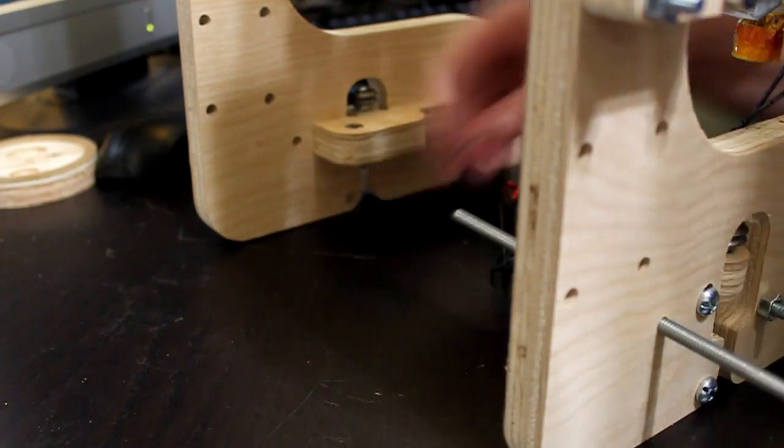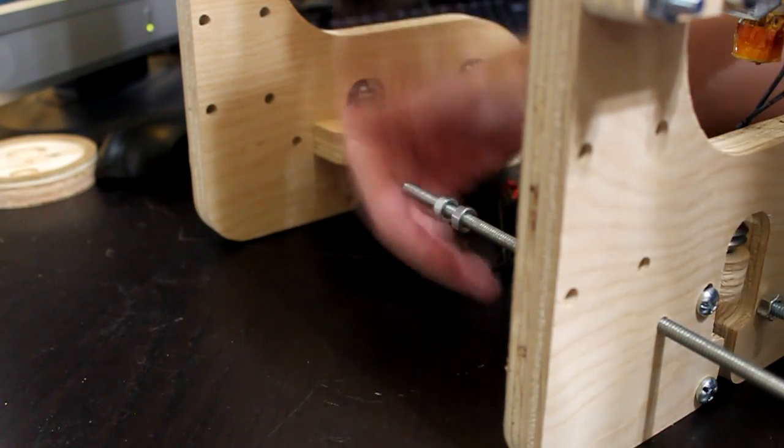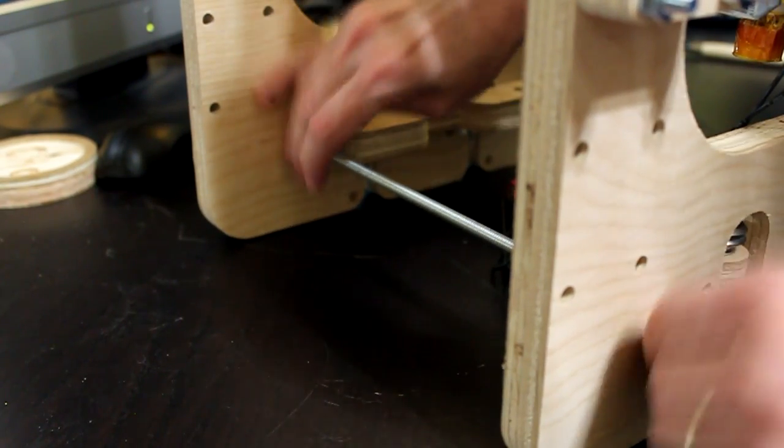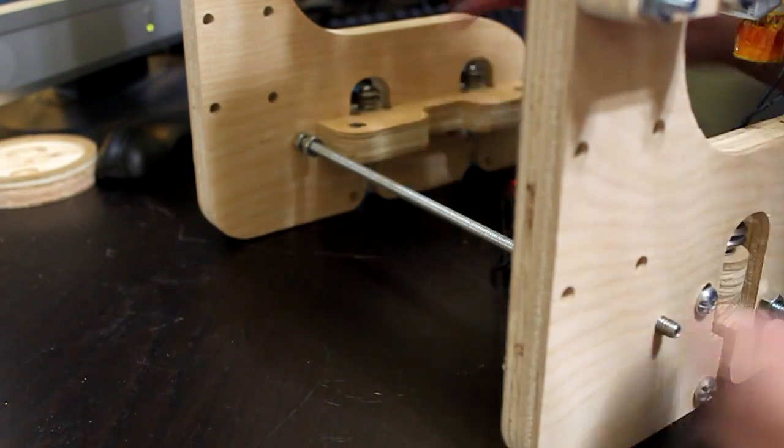This rod will require two nuts on the outside and two nuts on the inside. The two nuts on the inside are just to keep stability. The two nuts on the outside are to provide for the tension.